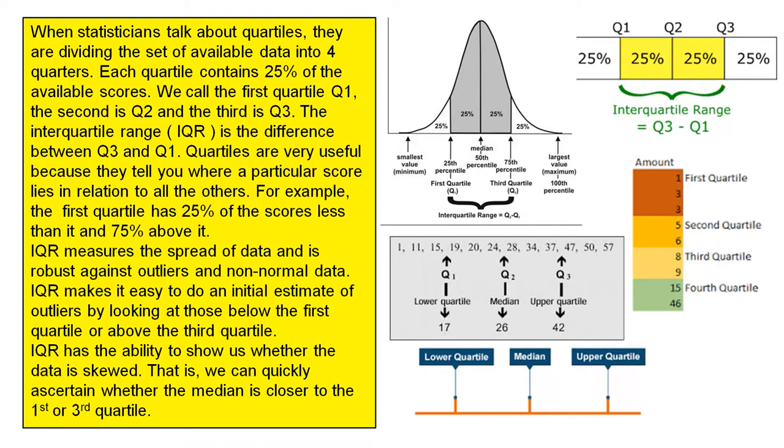Each quartile contains 25% of the available scores. We call the first quartile Q1, the second is Q2 and the third is Q3.